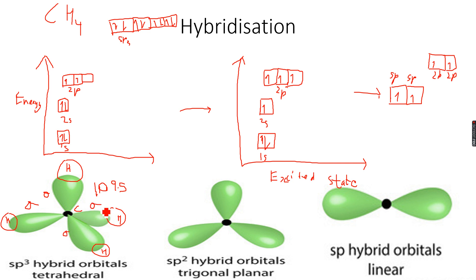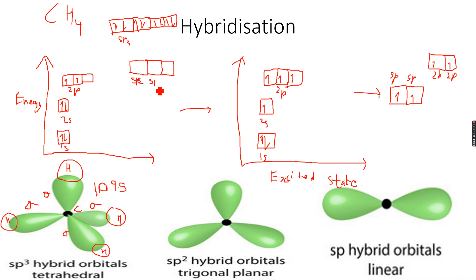Those bonds are called sigma bonds. Now let's look at SP2 hybridization. In SP2 hybridization, we have three SP2 hybridized orbitals and one lonely p orbital — three SP2 hybridized orbitals and one lone p orbital.